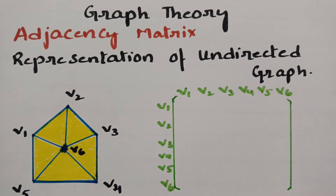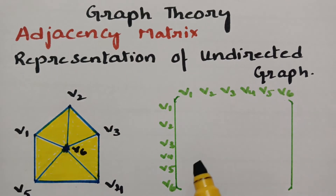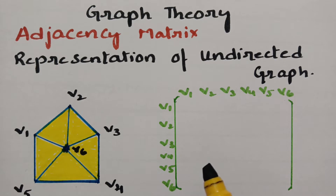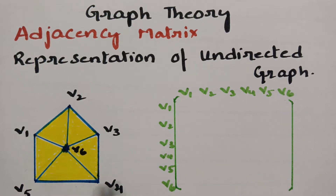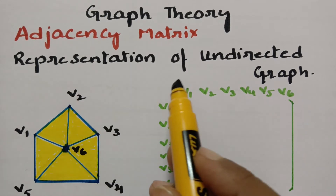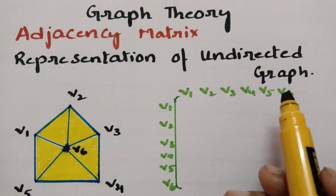This video is on adjacency matrix. Any graph can be represented by a matrix. A matrix is a very effective and convenient way of representing a graph in a computer for processing. In this session we discuss how to describe a graph using adjacency matrix, and the first thing here is the representation of an undirected graph.